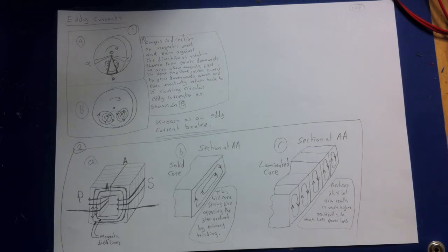As an example, consider a disk that rotates in a magnetic field perpendicular to the plane of the disk but confined to a limited portion of the disk's area, as shown here.